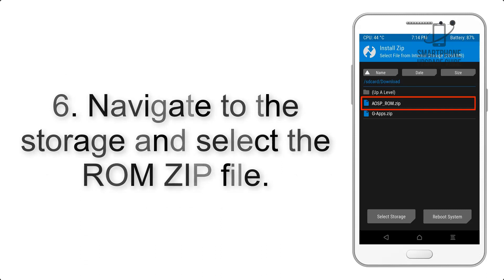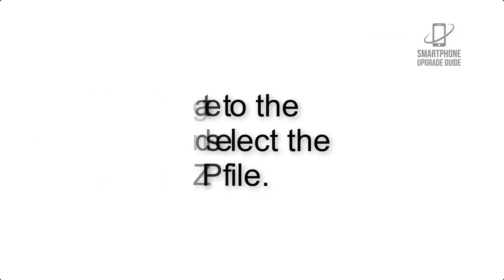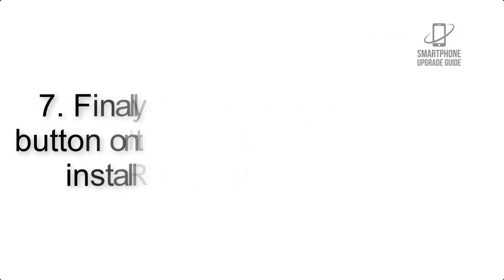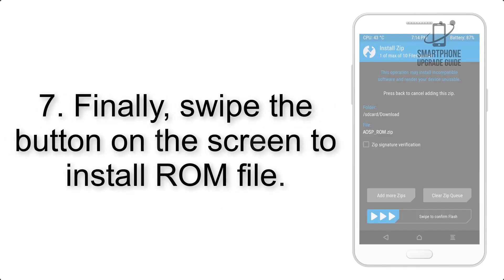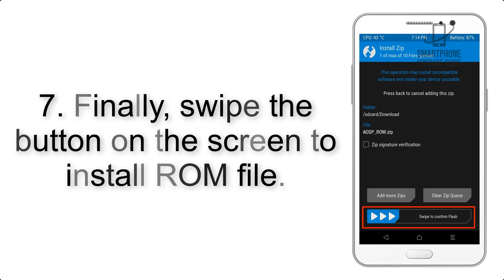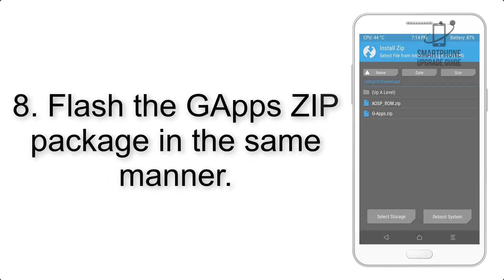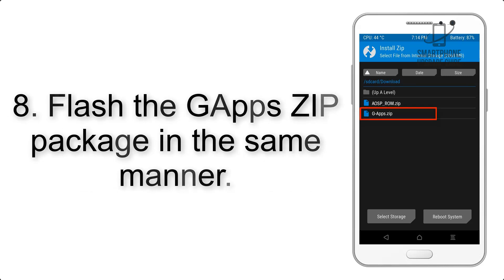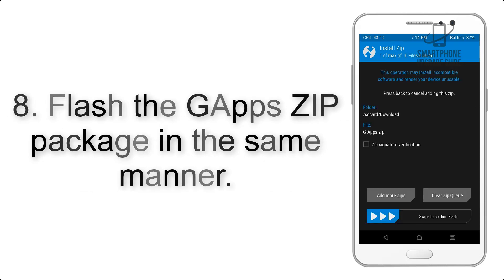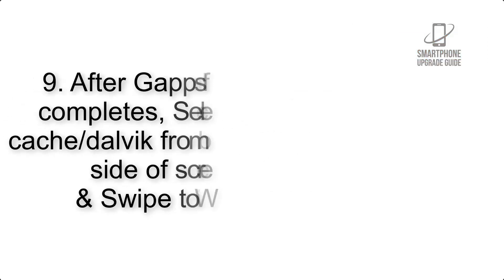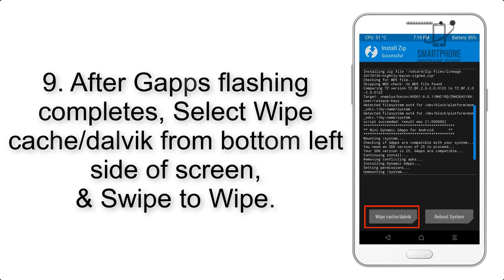Step 6: Navigate to the storage and select the ROM zip file. Step 7: Swipe the button on the screen to install the ROM file. Step 8: Flash the GApps zip package in the same manner.